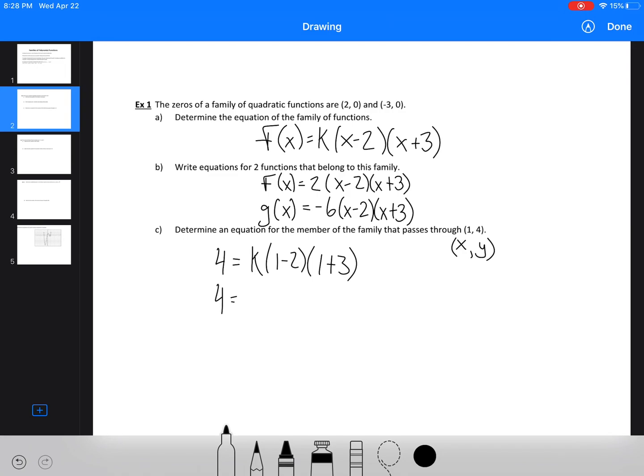So that's 4 equals k, negative 1 here, positive 4 here. So that's 4 equals negative 4k, and you could probably do this in less lines. I'm just writing it all out. So then, therefore, f(x) equals negative (x minus 2)(x plus 3) is the member.